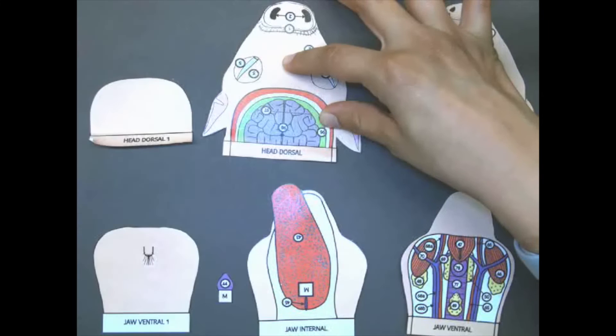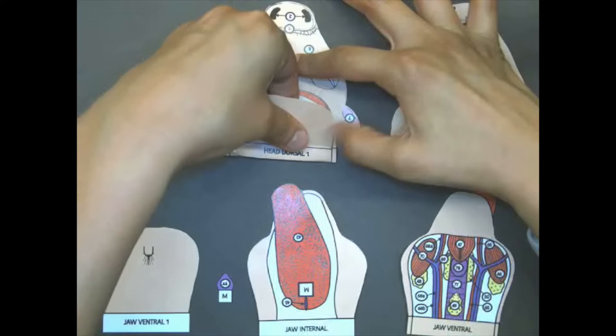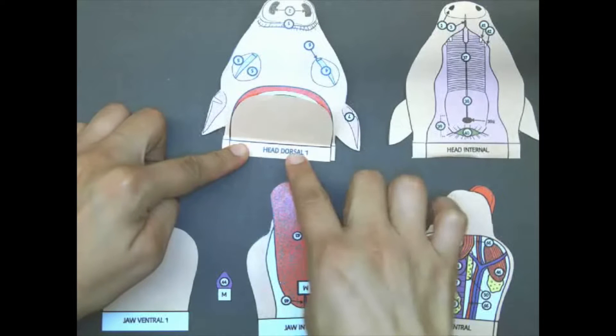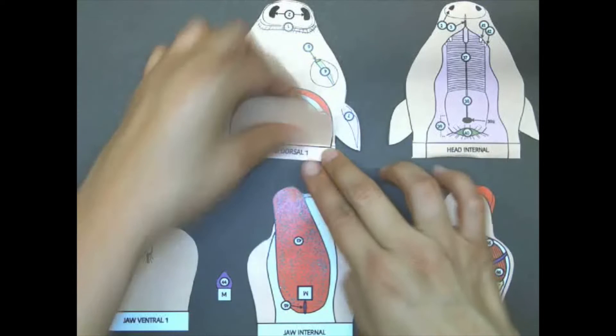Remember to just apply glue over the text. That way your skin can remain as a flap so that you can open and close it in order to view the brain.